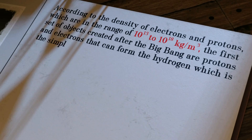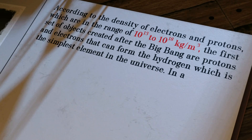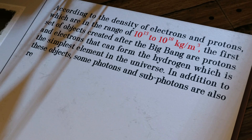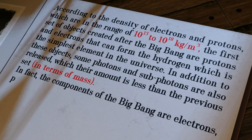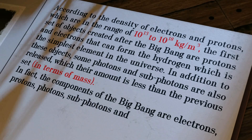The first set of objects created after the Big Bang are protons and electrons that can form hydrogen, which is the simplest element in the universe. In addition to these objects, some photons and sub-photons are also released, which their amount is less than the previous set in terms of mass.